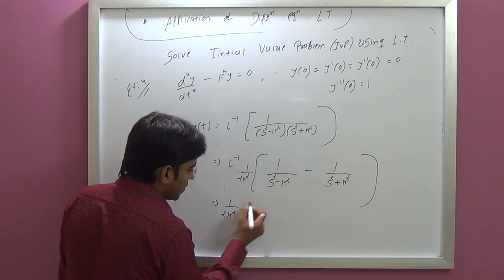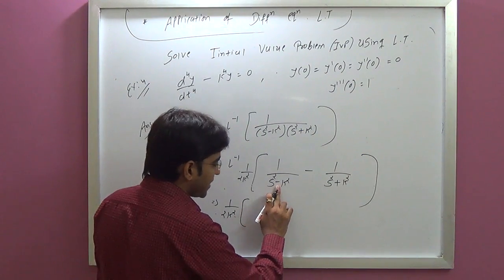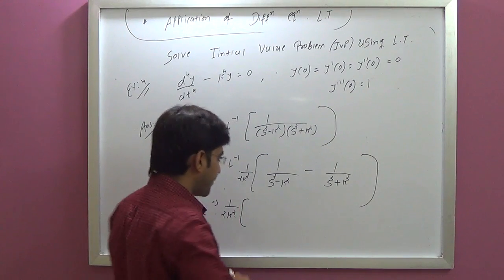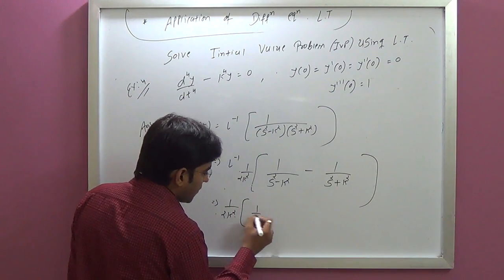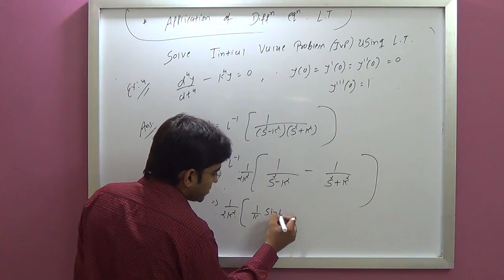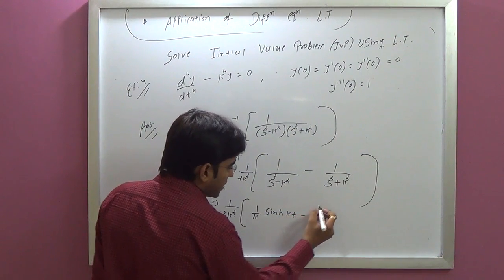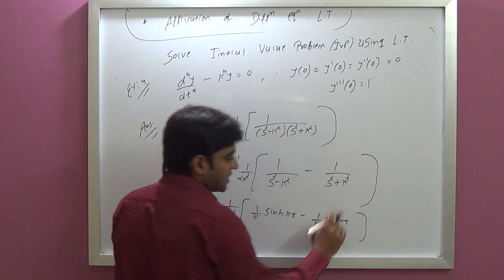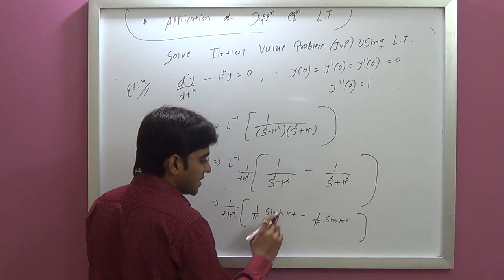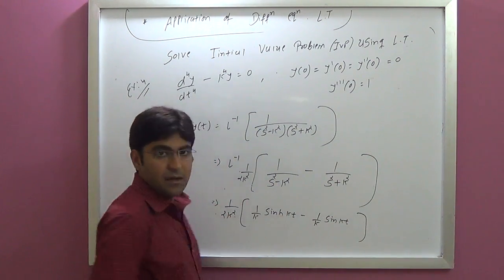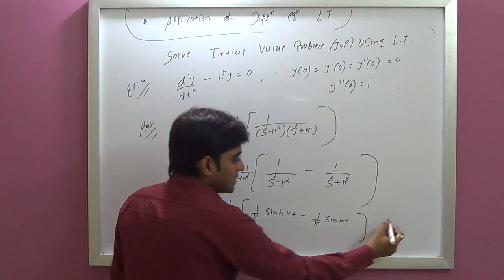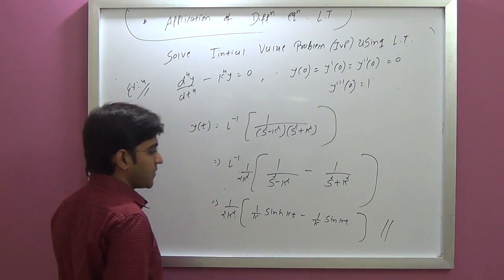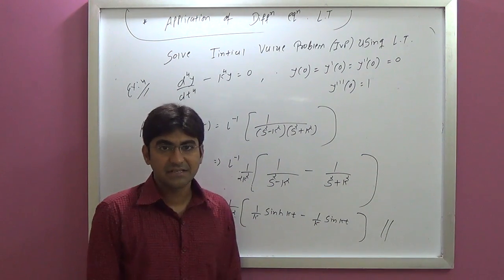The inverse Laplace gives the final answer: (1/k)·sinh(kt) minus (1/k)·sin(kt), since the minus term gives hyperbolic sine and the plus term gives ordinary sine. This is the final answer for Example 4. Next example.